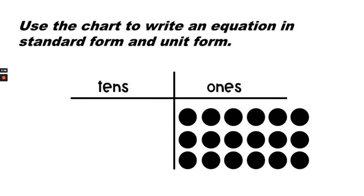Use the chart to write an equation in standard form and unit form. The answer is 3 rows of 6 ones and 3 times 6 ones equals 18 ones. In standard form, we would say 3 times 6 equals 18.